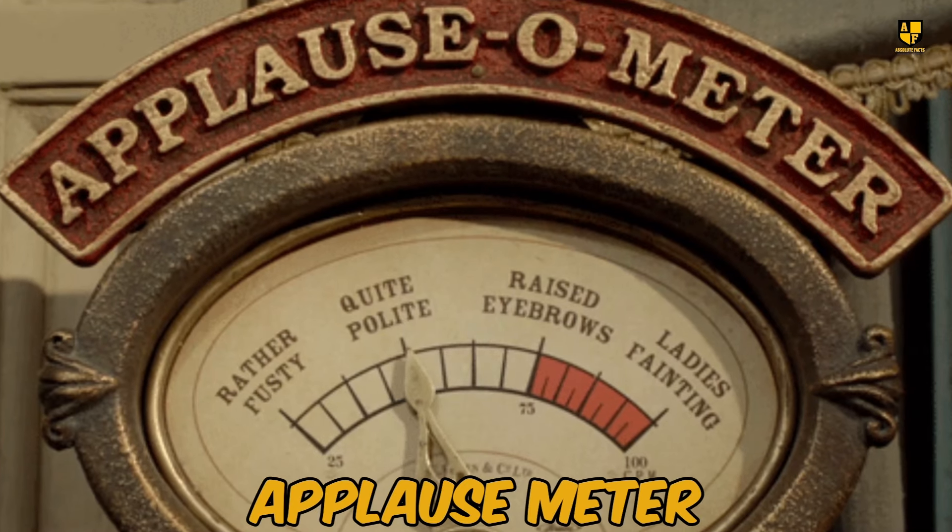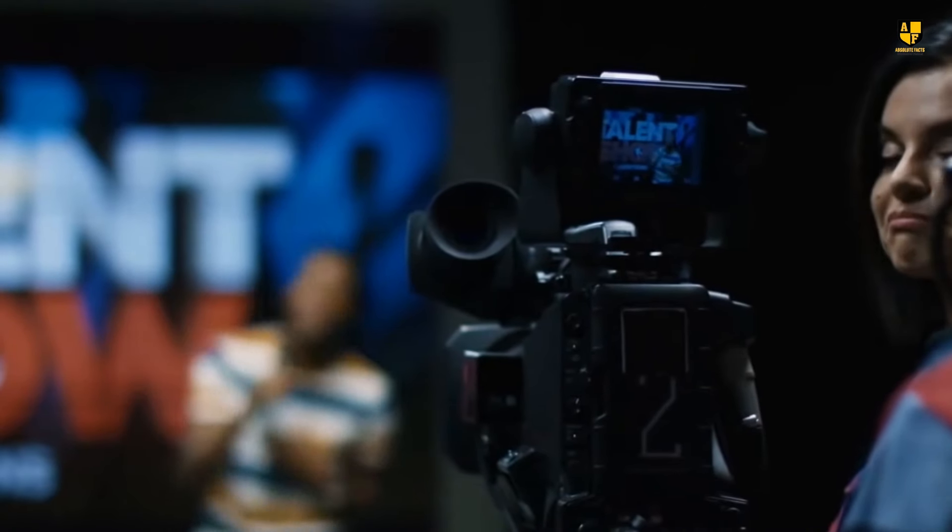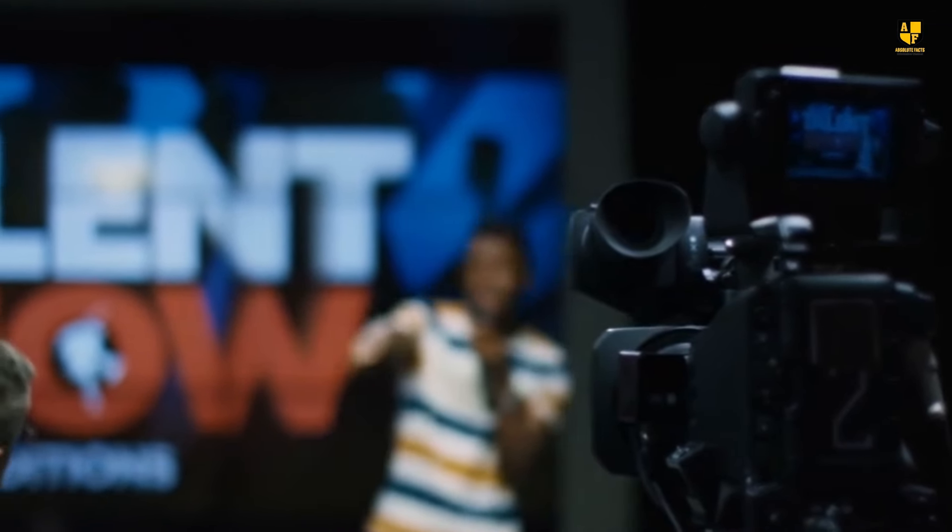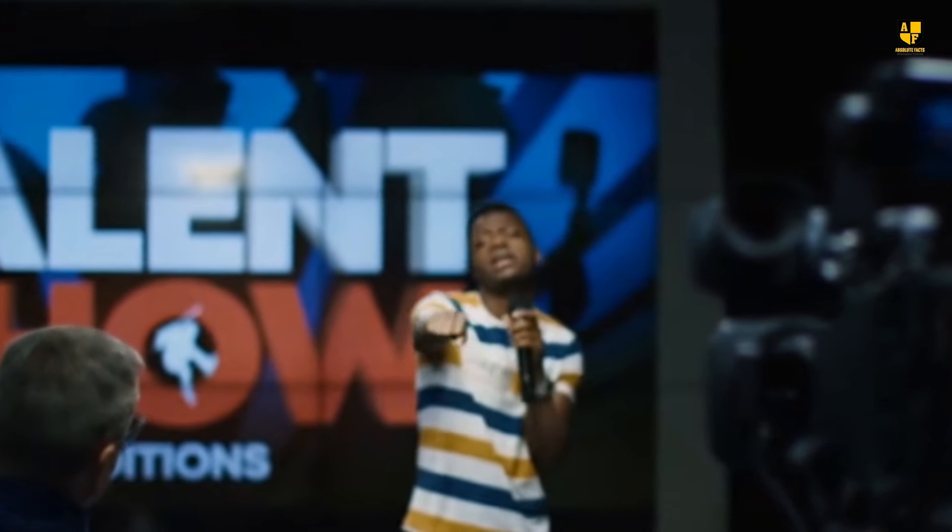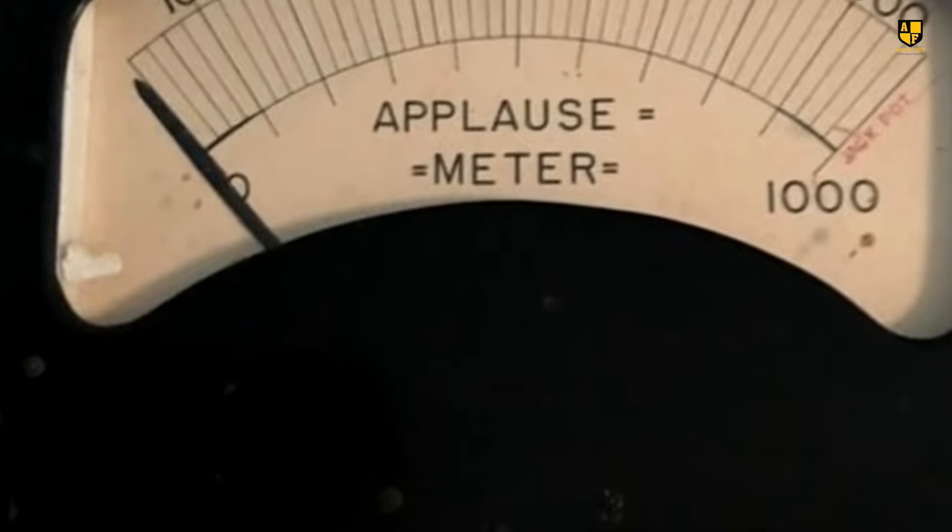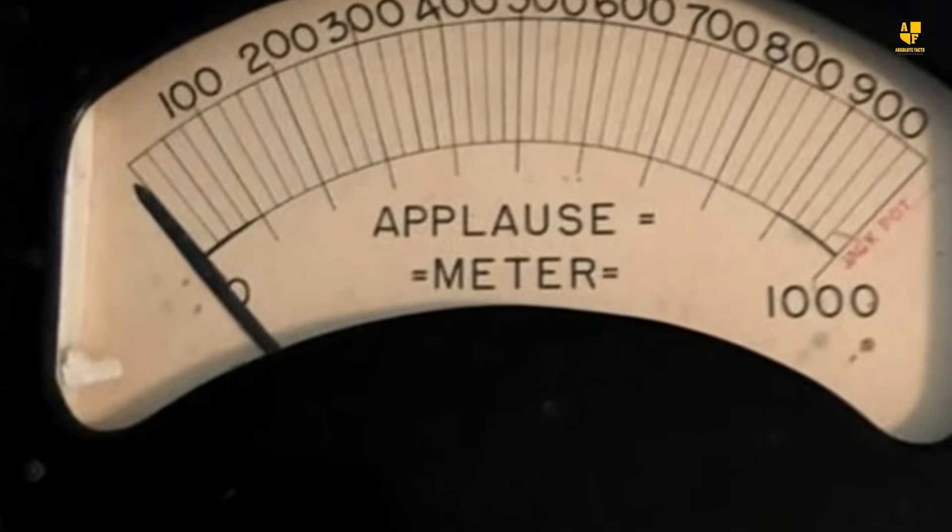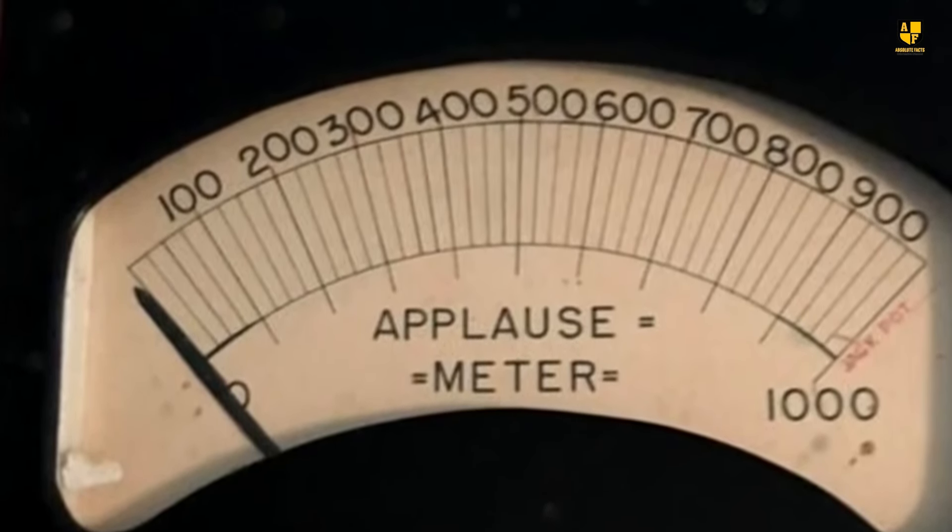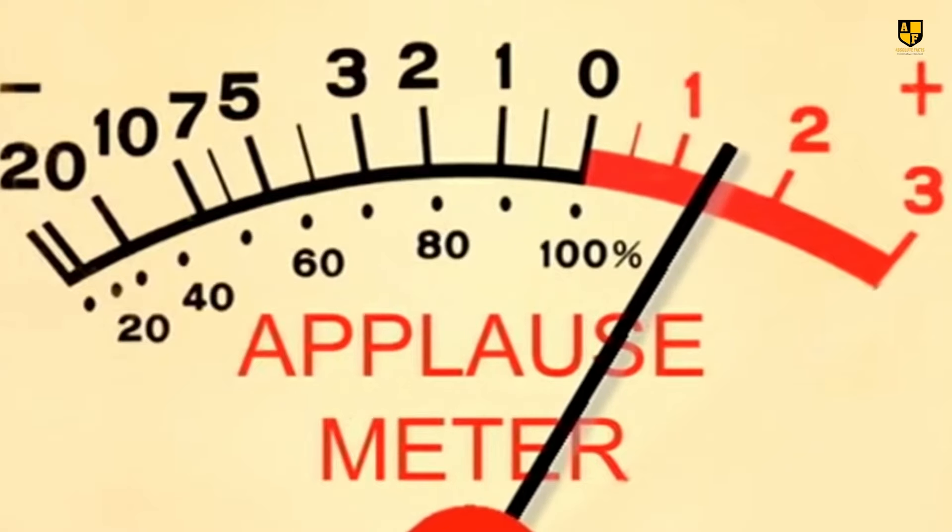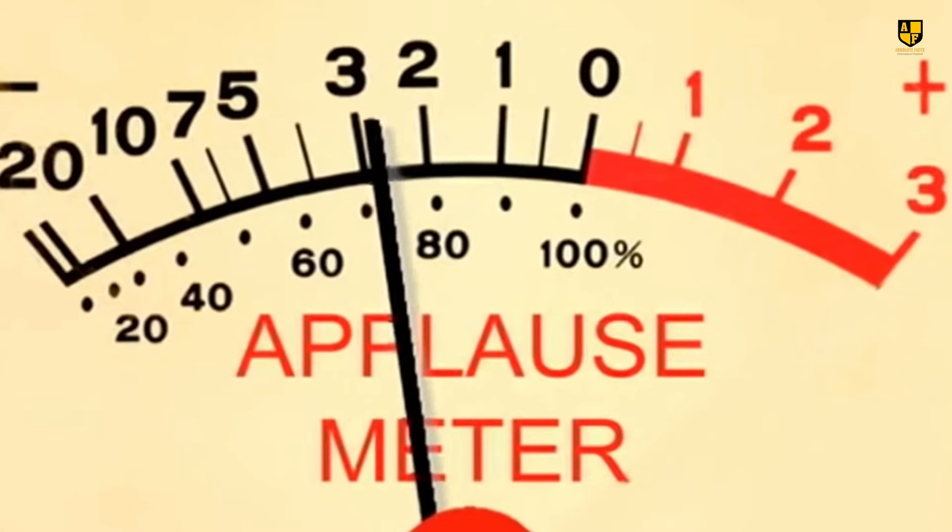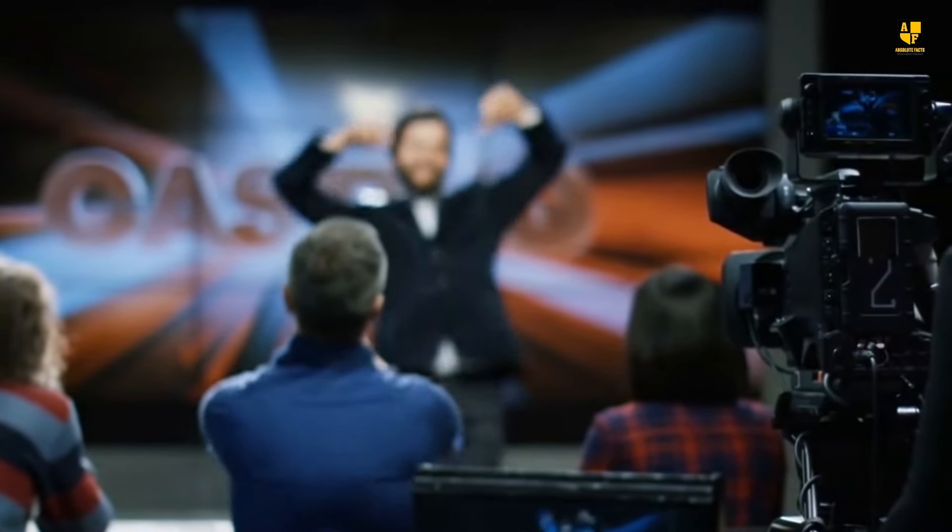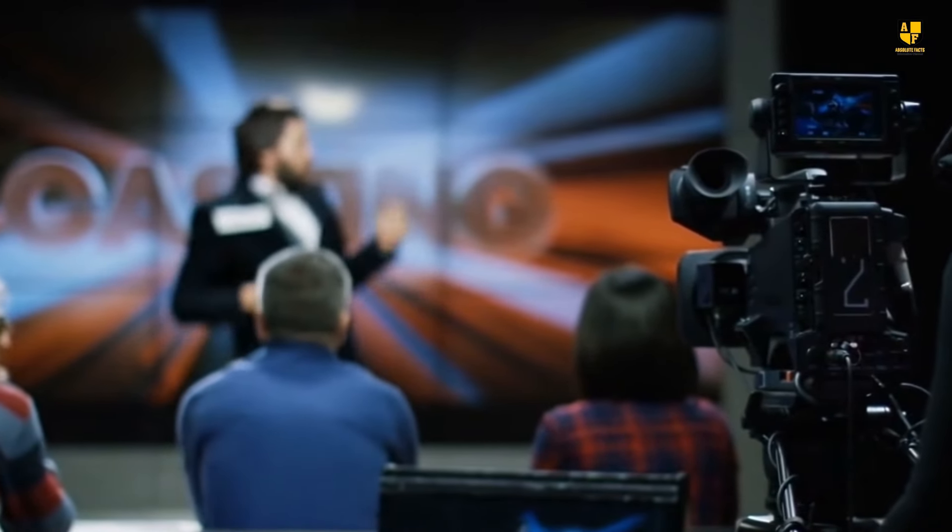Number 1. Applause Meter. In the talent shows of the 1960s and 70s, winning wasn't decided by text votes or panels of judges, it was a raw, electrifying battle of applause. At the heart of this drama was the applause meter, a device that transformed the audience's cheers into a measurable force of approval. With its needle dancing across a numbered scale, the applause meter looked like a voltage tester, but felt like pure magic. The louder the cheers, the higher the needle soared, adding suspense to every performance.